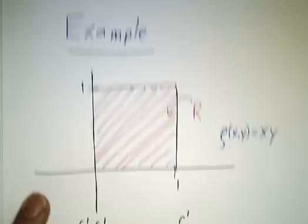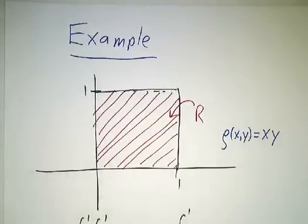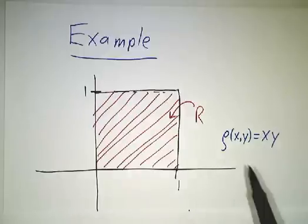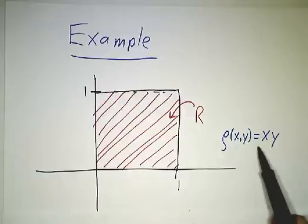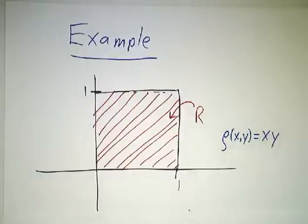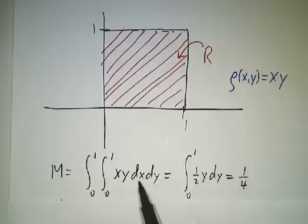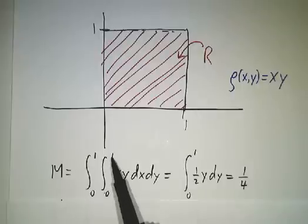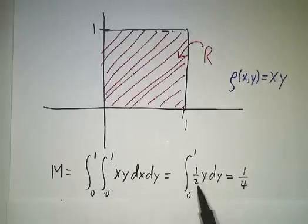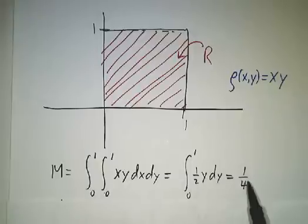Let's work an example. We'll take something distributed on the unit square, but the density isn't constant — the density is x times y. The first thing we want to do is figure out the mass by integrating xy dA. We integrate over x: x²/2 evaluated from 0 to 1 gives 1/2. Then we integrate over y: y²/4 evaluated from 0 to 1 gives 1/4. So the mass is 1/4.